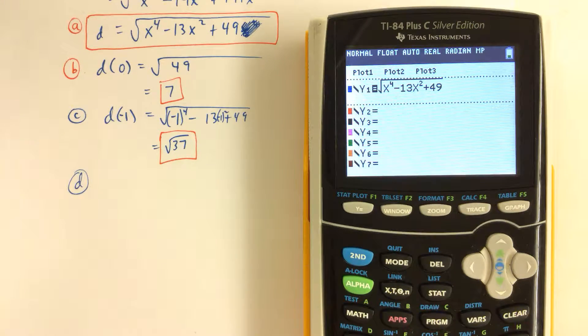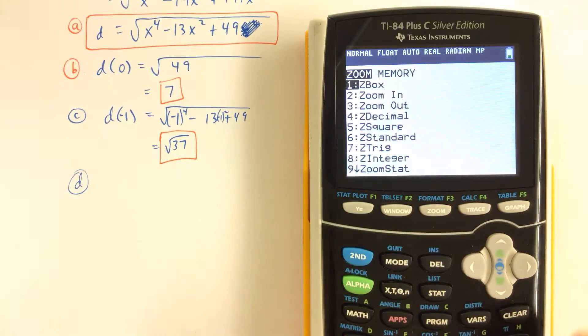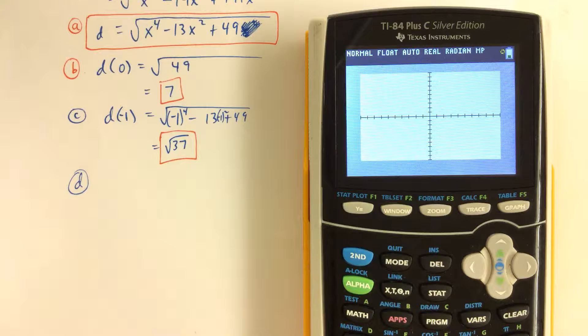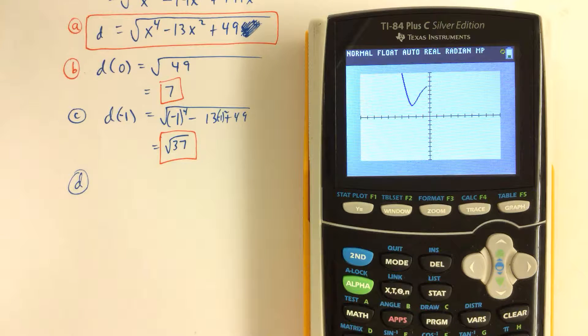Part D, we're asked to graph the function. If we just type in the function into our Y1 and we hit zoom 6 for the standard viewing window, we get the shape of the graph.